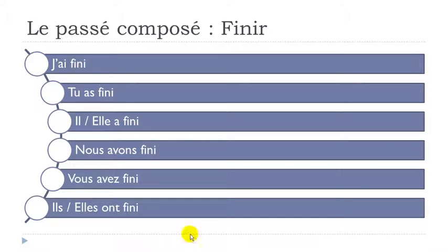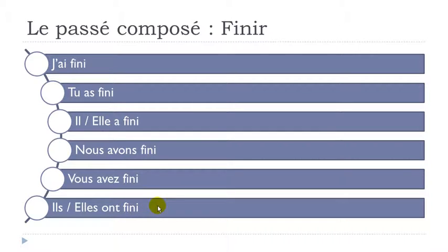Let's see them one more time. Remember, as we saw previously, you've got avoir here and then you've got fini. So this participe passé form — the second form that you add to construct the passé composé — and fini doesn't change. It's here all the time and it's written the same way.